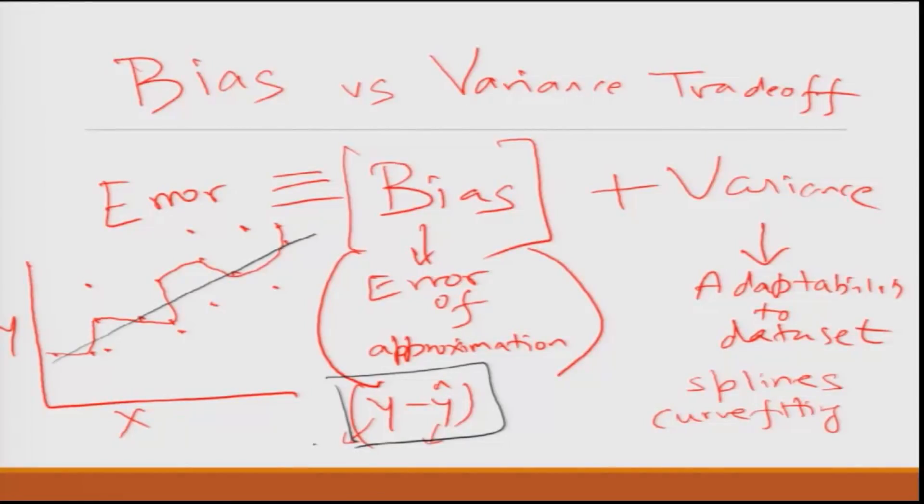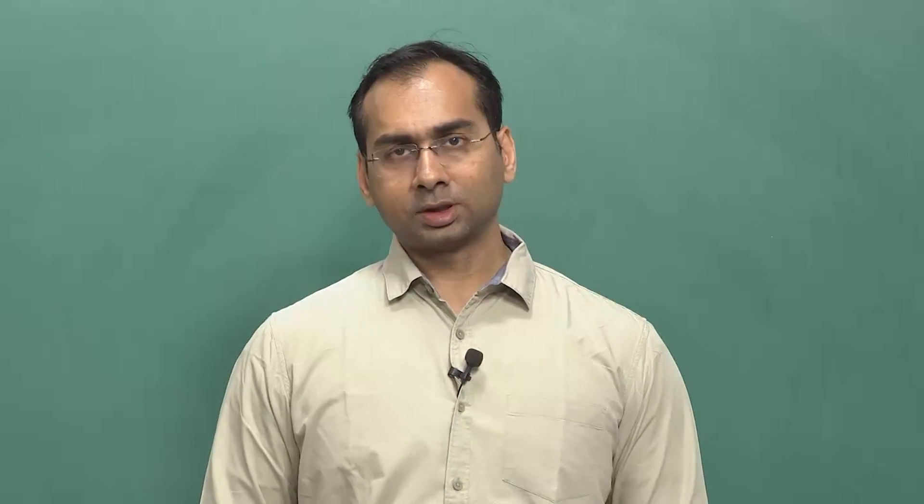This is called overtraining. Your model was so much trained in the existing set of data that when a new set of data came it did not have any clue what to do. Such models, typically when you use more complex models, these models will fit because there are more variables, more parameters in the model, they will fit very accurately with the existing data set. But then when you run the model on a new data set the predictions often come out to be very poor.